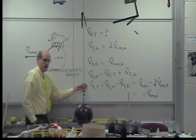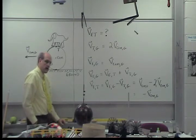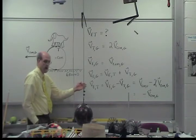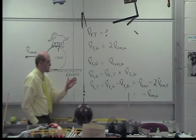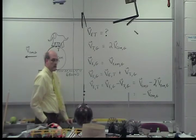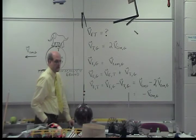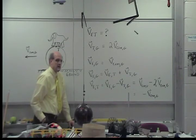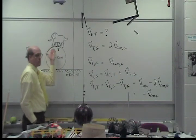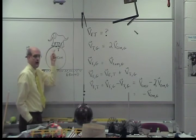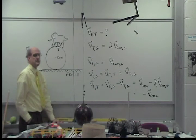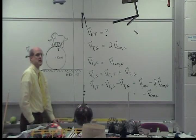Solving for the unknown — the velocity of the elephant relative to the top — we get the velocity of the elephant relative to the ground minus the velocity of the top of the barrel relative to the ground, which equals the velocity of the barrel's center of mass relative to the ground minus twice that velocity, which becomes negative the velocity of the barrel's center of mass relative to the ground. So the elephant has to walk backwards with respect to the top at a speed equal to the barrel's center of mass velocity relative to the ground.